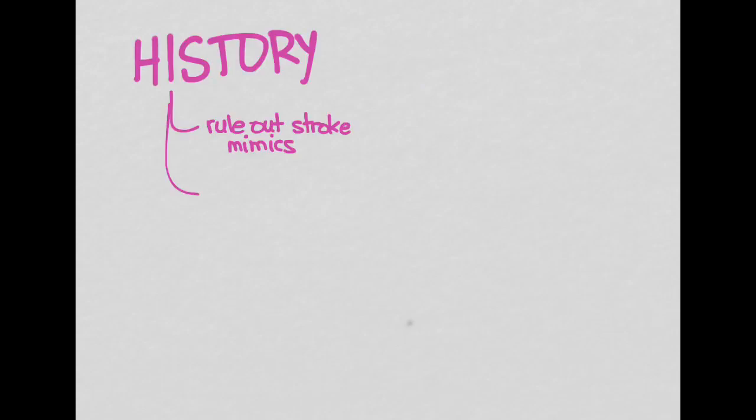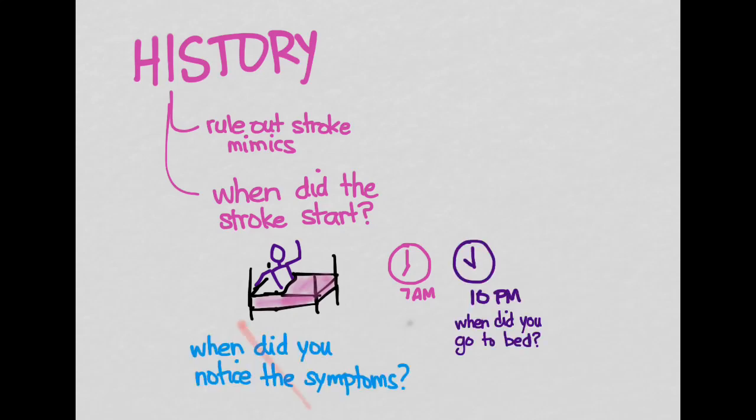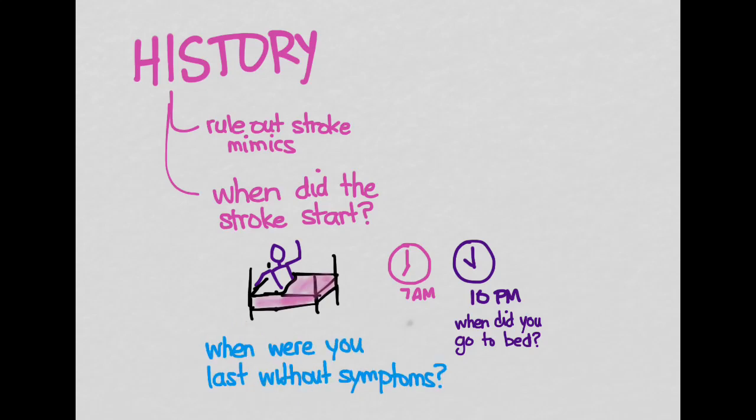Once you do, there's some other things that you want to get on your history. You also need to know when did these symptoms start. You might think this is just a simple question to ask the family, when did you notice that there was something wrong? But that's not the question. The question isn't when did you notice, the question is when did it start. The classic example of this is the patient who wakes up with symptoms. So when did the stroke start? Did it start at 7 a.m. when they got up and noticed that they have a stroke? We don't know. It could have happened at 3 a.m. when they were asleep. It could have happened at 11 p.m. when they were asleep. So the only time that we do know is when did they go to bed and were they normal when they went to bed? So we don't want to ask the question, when did you notice the symptoms? Instead, ask, when was the last time that you were without symptoms?